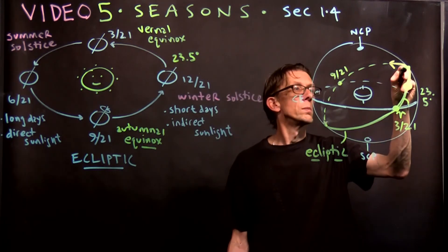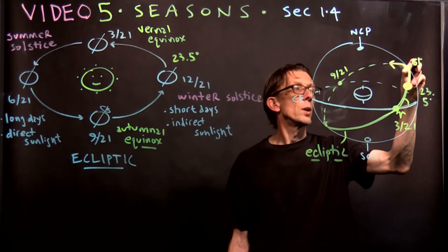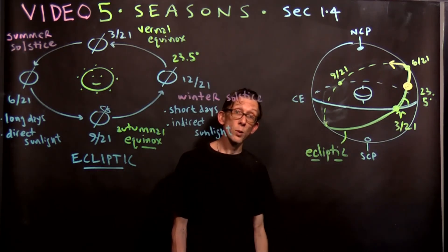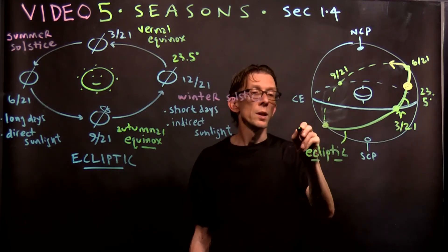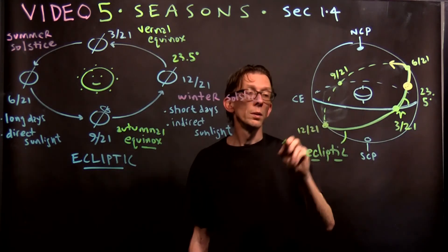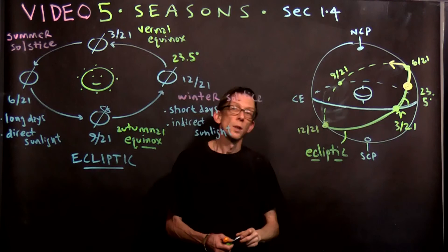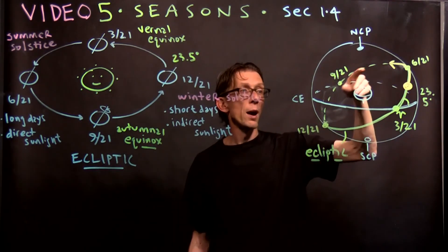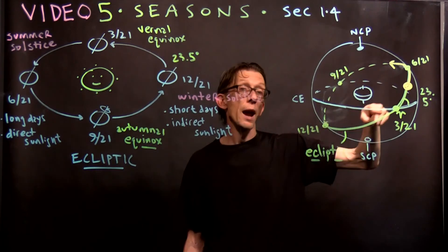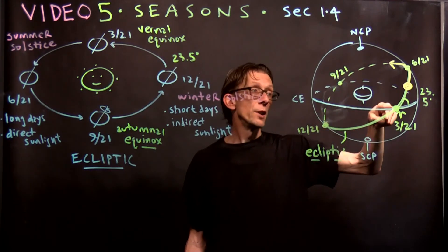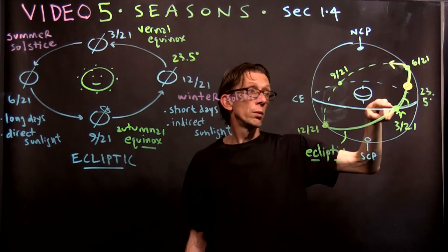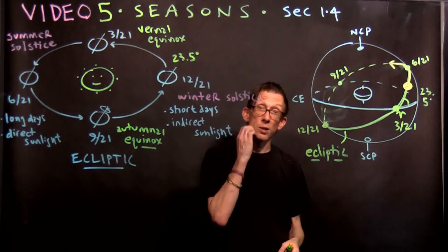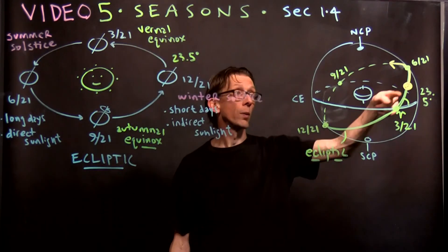First day of Spring, the Sun is there. When the Sun is way over here, that's at 9/21. That is the autumnal equinox. The point way up here, 6/21. When it's high in the northern sky, that's the summer solstice. And down here, the lowest point is 12/21, the winter solstice. So we have four points.